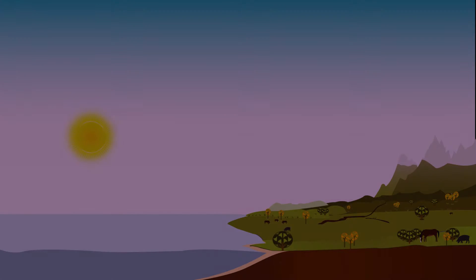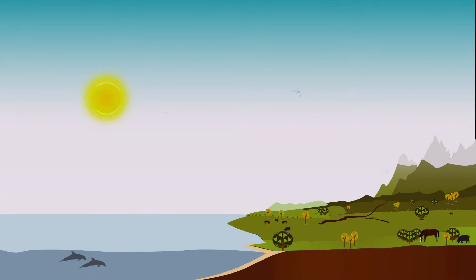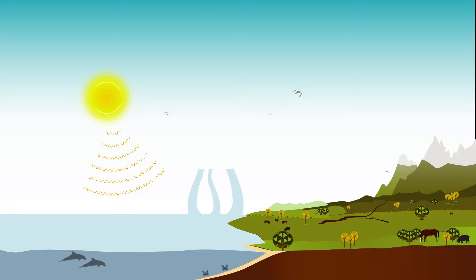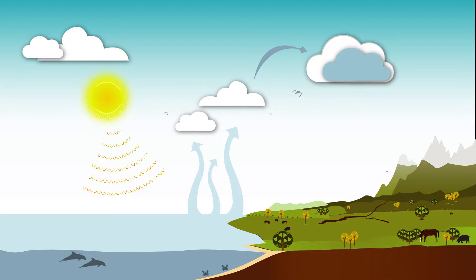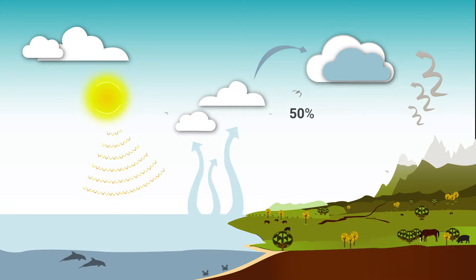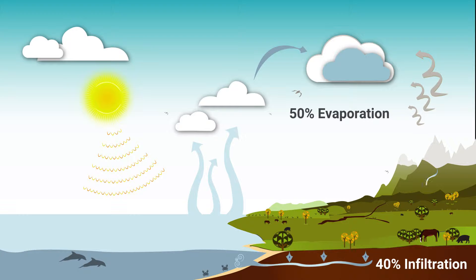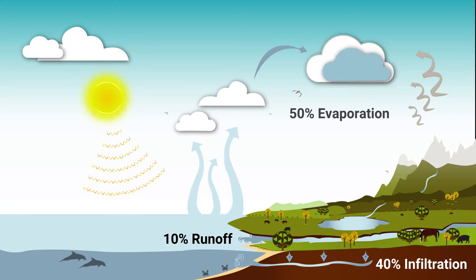Understanding how freshwater cycles on the Earth helps us find the source and causes of pollution. Energy from the sun heats the surface of exposed water, evaporating it into its gas form. As water vapor cools, it condenses, resulting in rain and snow. In natural areas, the majority of this water is evaporated back into the air or absorbed into the ground. The rest runs downhill through the watershed in creeks that empty into lakes and rivers, then bays and seas.